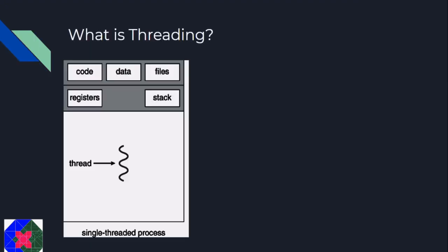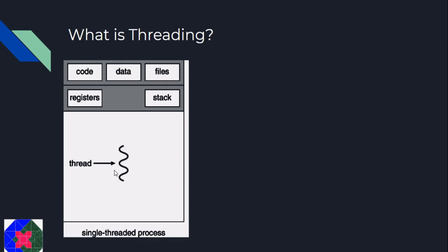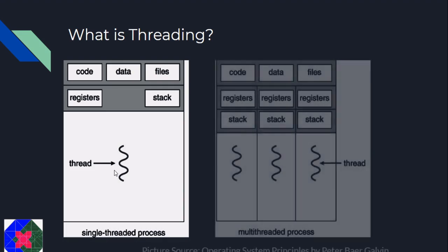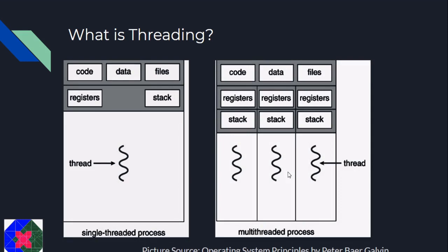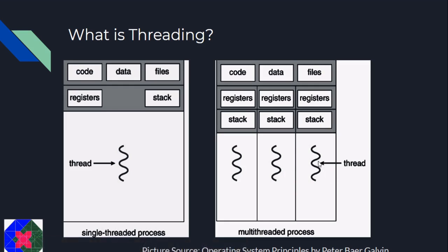Normally when we write programs, we tend to use only one thread. Every process has a single thread running, which is called the main thread. It runs your code sequentially. Now if you have some code which you want to run concurrently or simultaneously with some other piece of code, then you have to use multithreading. Threads are theoretically the basic unit of CPU utilization. A single process can have multiple threads running, and all the threads share that process's code, data, and files — that is, variables are shared. But every thread has different registers and a separate stack of its own.